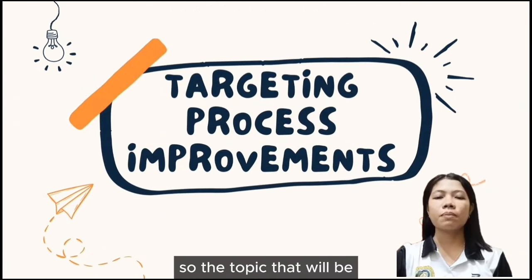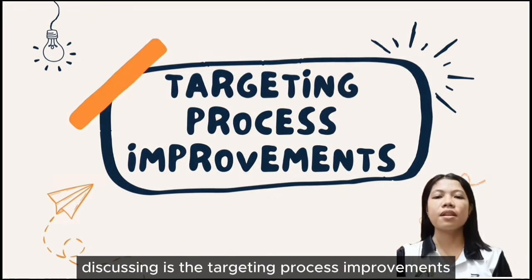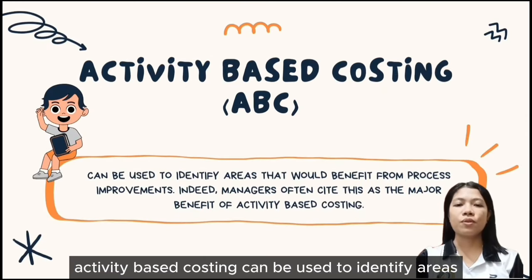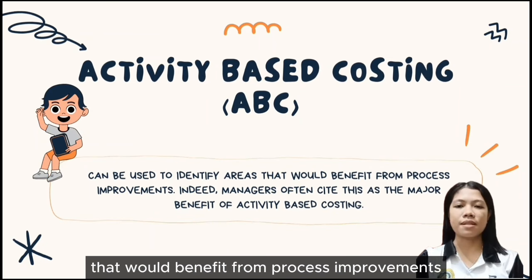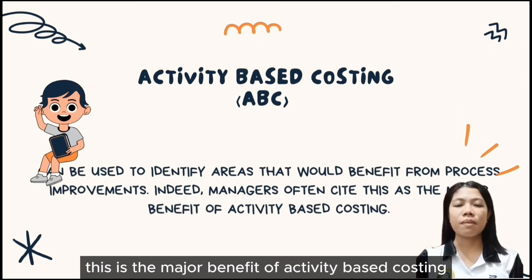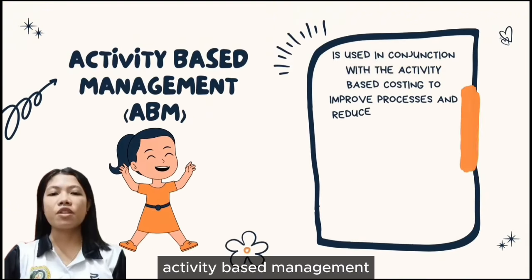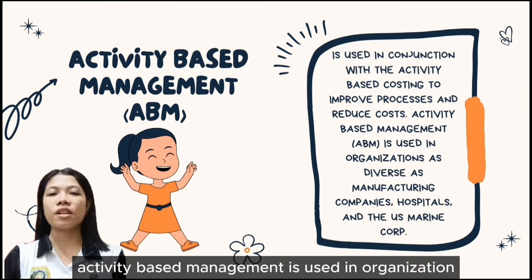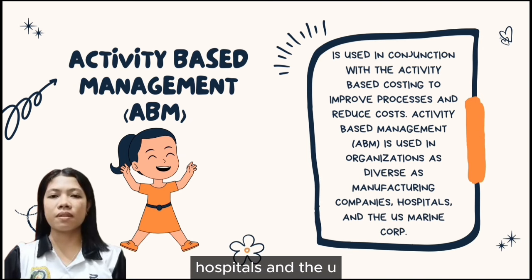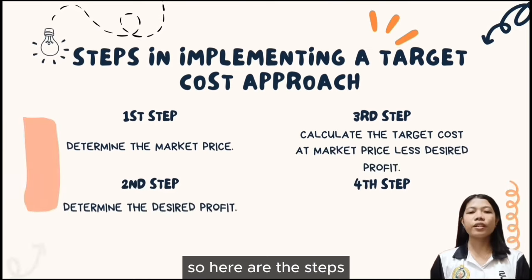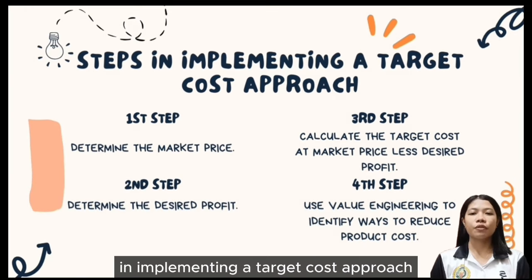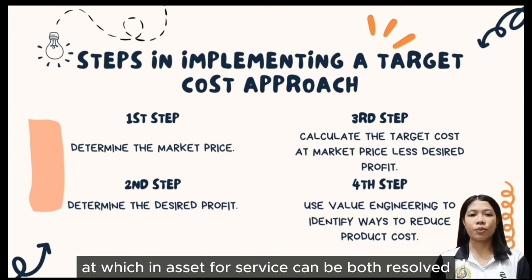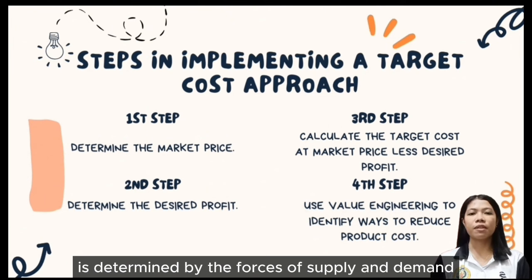Good day everyone. The topic we'll be discussing is targeting process improvements: Activity-Based Costing plus Activity-Based Management. ABC can be used to identify areas that would benefit from process improvements — managers often cite this as the major benefit of ABC. Activity-Based Management is used in conjunction with ABC to improve processes and reduce cost, in organizations as diverse as manufacturing companies, hospitals, and the U.S. Marine Corporation. The steps in implementing a target cost approach are: first, determine the market price; second, determine the desired profit.